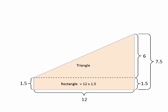The area of the rectangle is 12 times 1.5, which is equal to 18. And the area of the triangle is 1 half the base times the height, which is 1 half times 12 times 6, which equals 36. So the total area of the trapezoid is 18 plus 36, which is equal to 54.